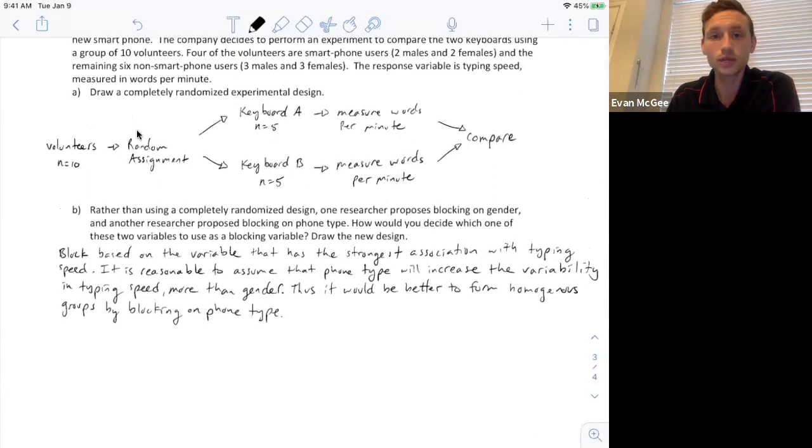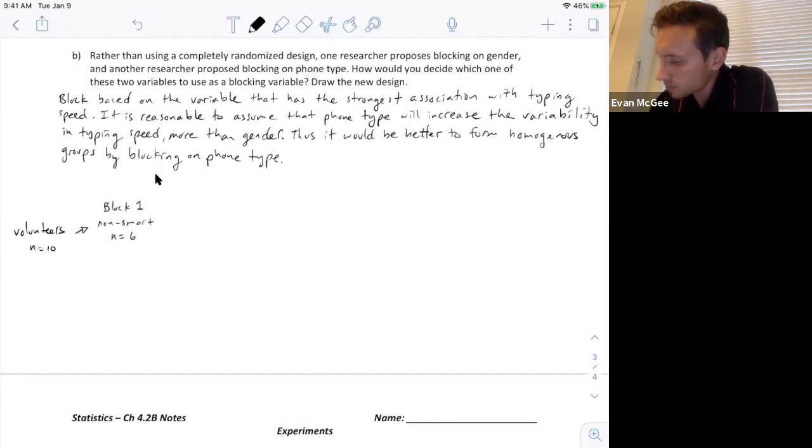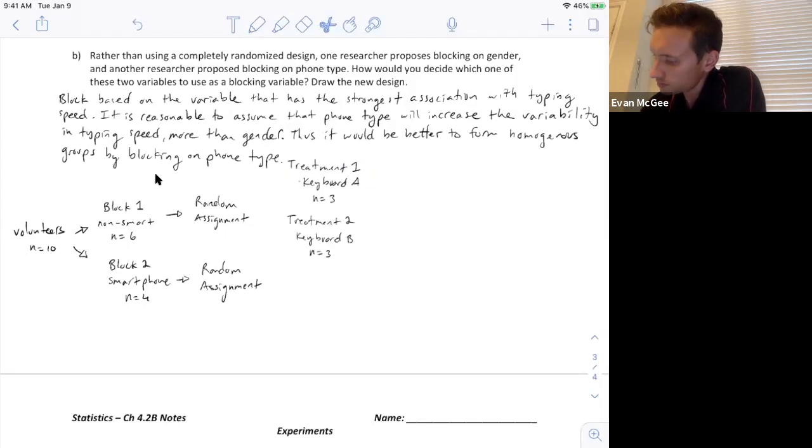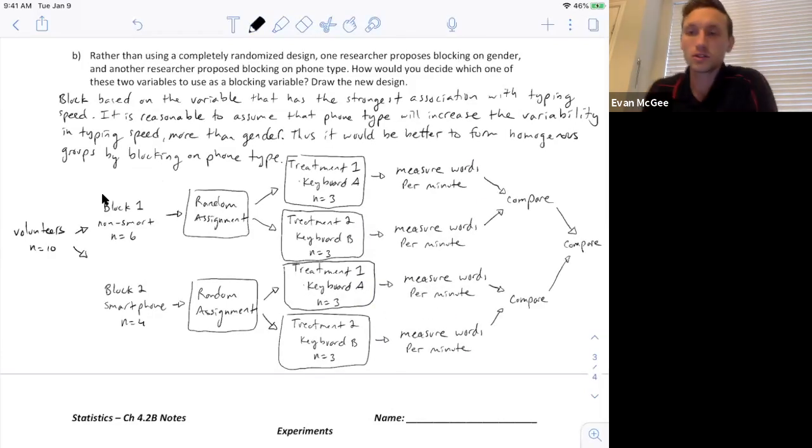So looking back at our completely randomized design, now we're not going to randomly assign to the keyboards until after we've broken them up into the two blocks. So we know which blocks it will be, whether they're a smartphone user or a not smartphone user, and then the random assignment will happen after they've been put in their blocks.